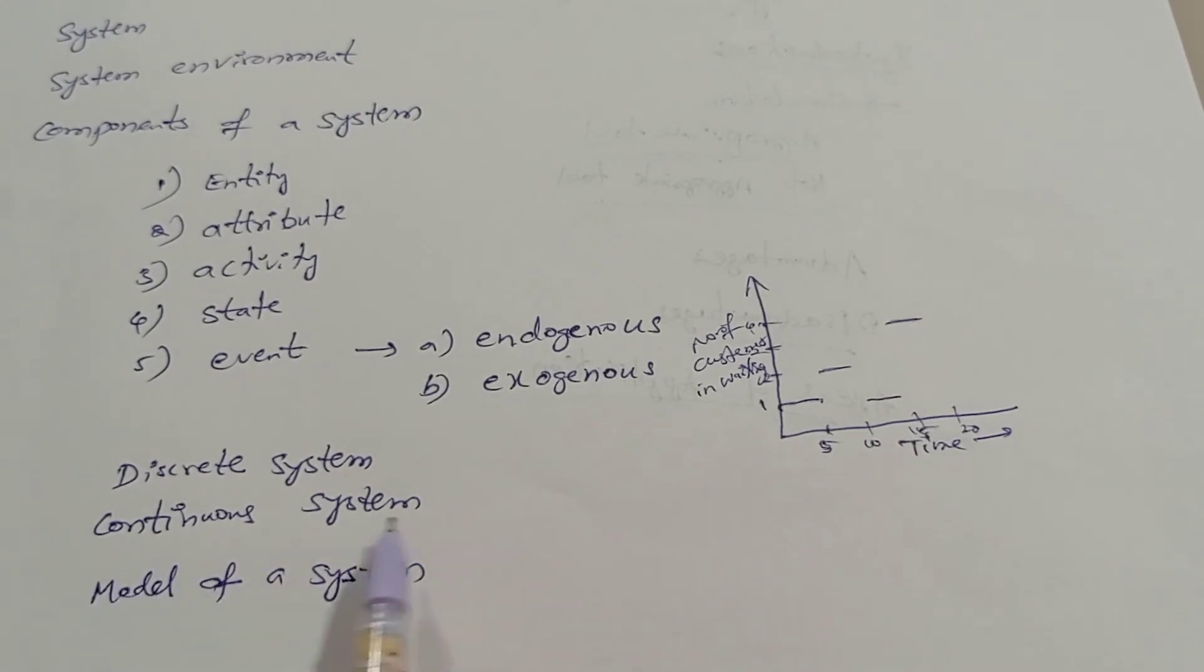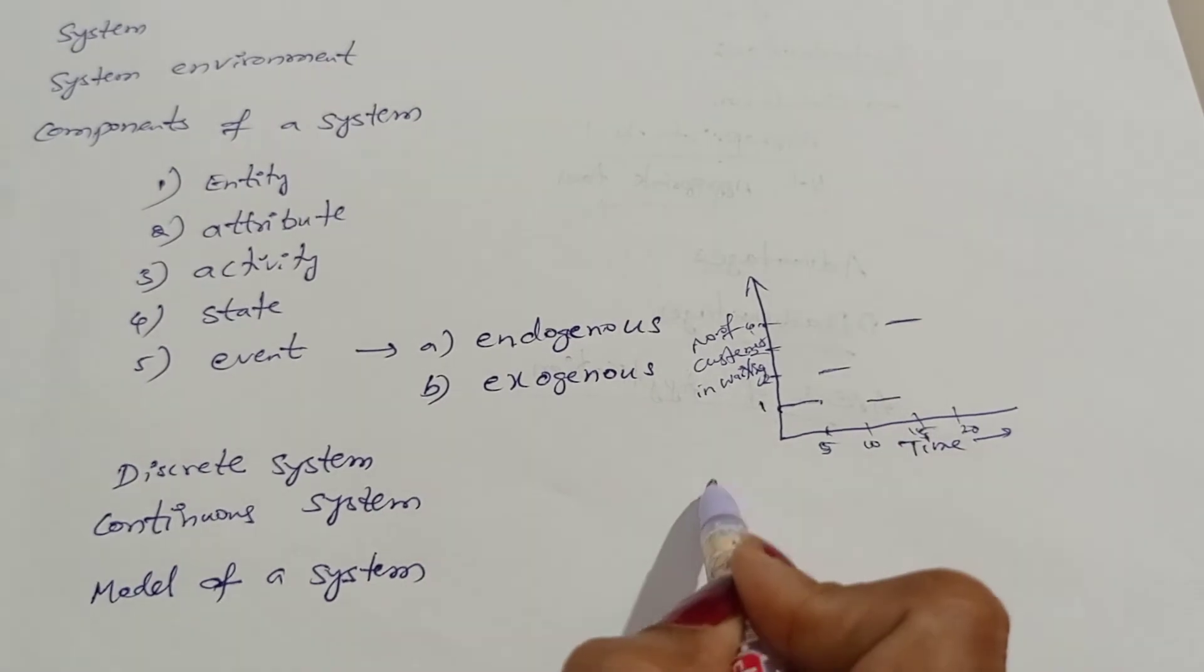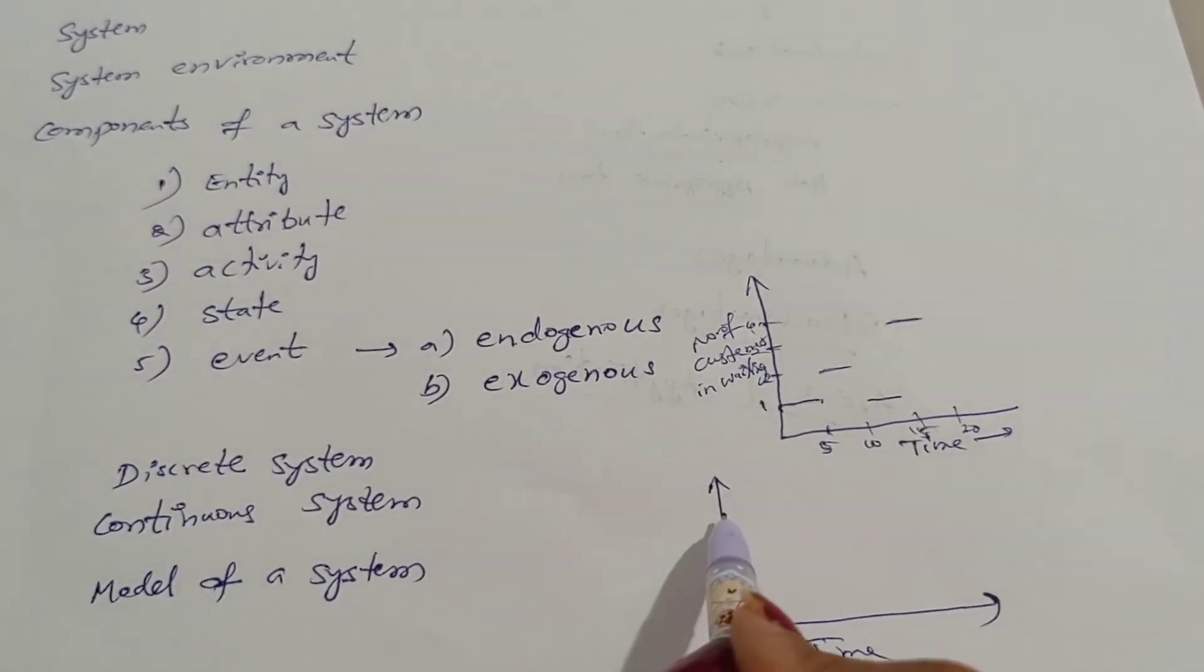Coming to continuous systems. A continuous system is one in which the state variables continuously change over time. We will draw a similar graph. This is time, and it changes continuously.